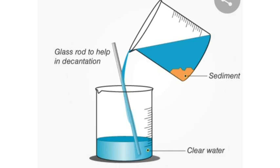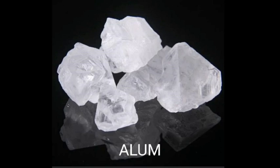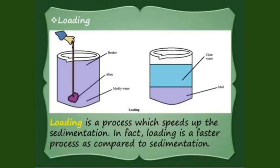Sometimes the insoluble particles do not settle down easily at the bottom of the liquid, so we add a small piece of alum. Alum, or potash alum, speeds up the rate of sedimentation. The suspended particles which remain scattered in the liquid become heavy with the help of alum dissolved in water. This process of adding alum to speed up sedimentation is called loading, because it increases the load of the suspended particles.